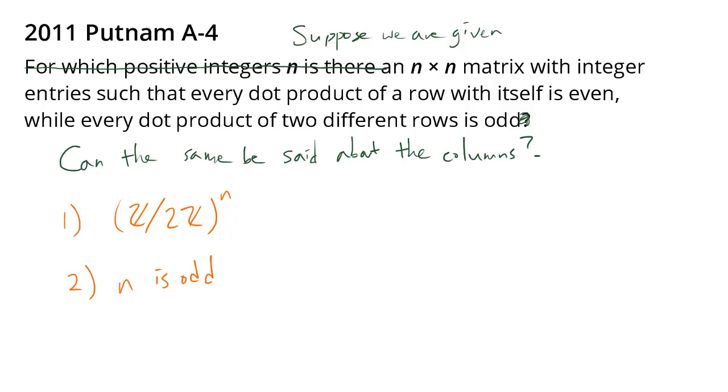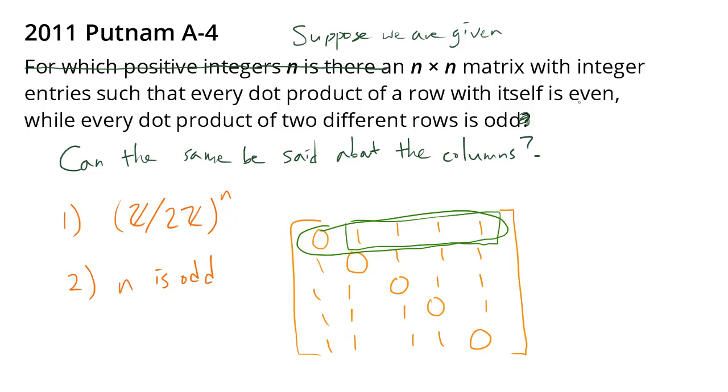To be precise, we proved that n being odd is in fact a sufficient condition in the last video. And the example that we gave was the matrix with zeros on the diagonal and 1 everywhere else. And this worked, because if you take a dot product of a row with itself, you're going to be adding an even number once, getting you zero. So you do indeed get an even number.